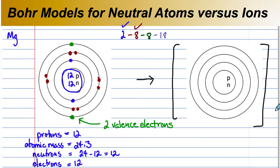We can draw a Bohr model for the ion as well. So the Mg ion will have a two plus because two electrons are lost. The number of protons stays the same. The number of neutrons stays the same in the nucleus.